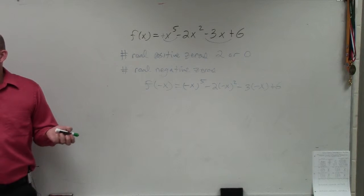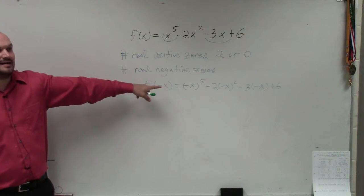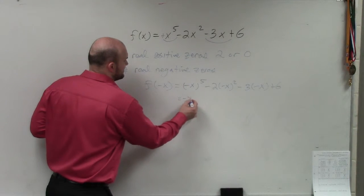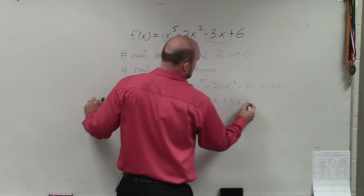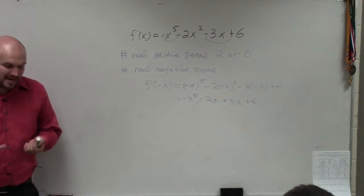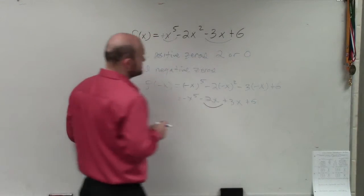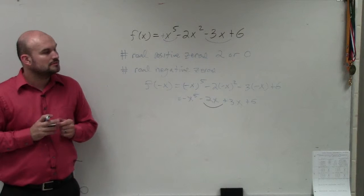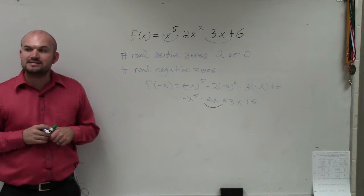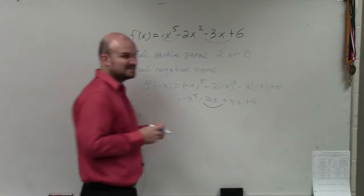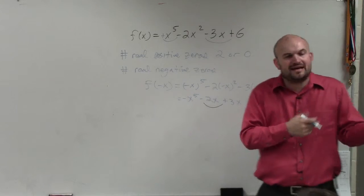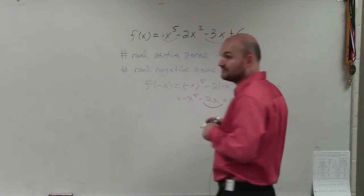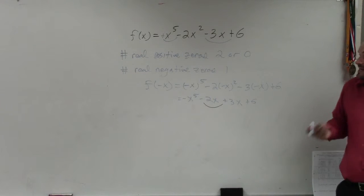So negative x, any negative number raised to an odd power is going to be negative. So that's negative x to the fifth. That's positive. So that's negative 2x squared. That becomes positive. That becomes positive. So again, we just count the number of sign changes. There's only one sign change. So I go from a negative to a positive. So therefore, can I subtract an even number from 1? You can, but it would be negative. You can't have a negative number of things. So therefore, there's only one negative real zero.